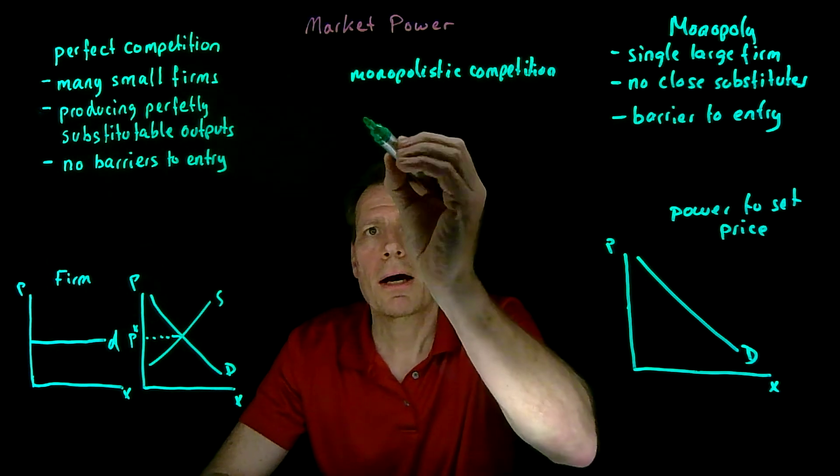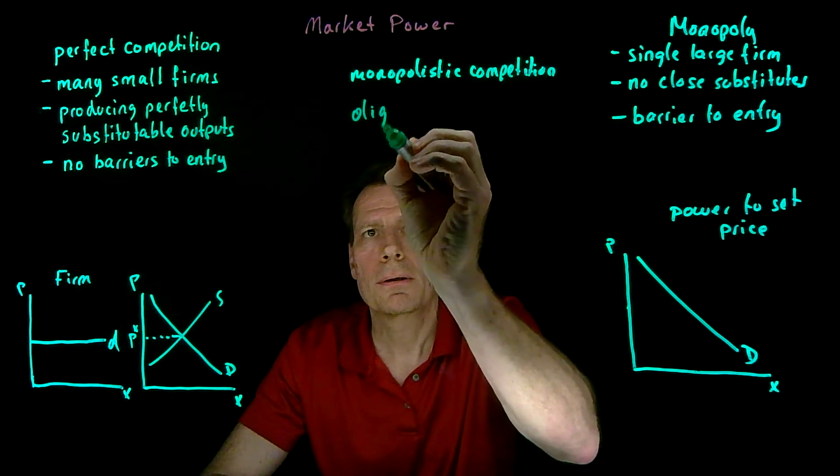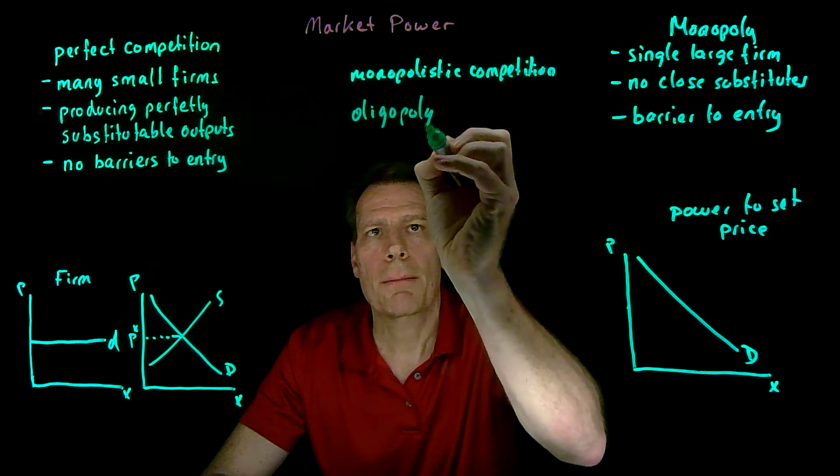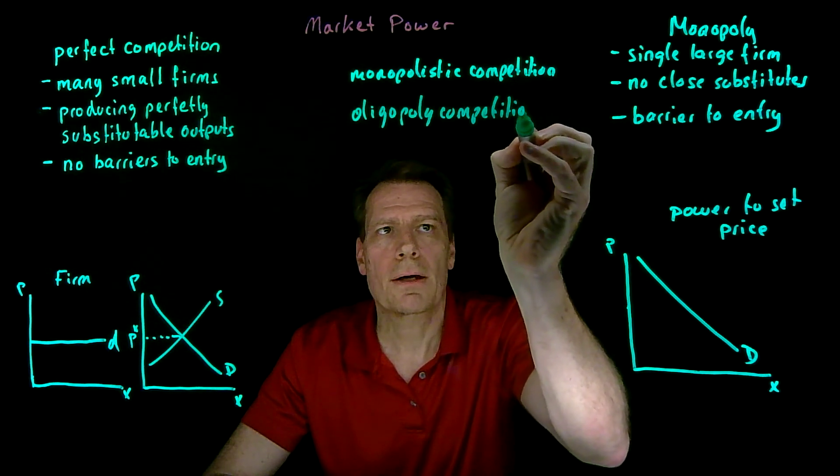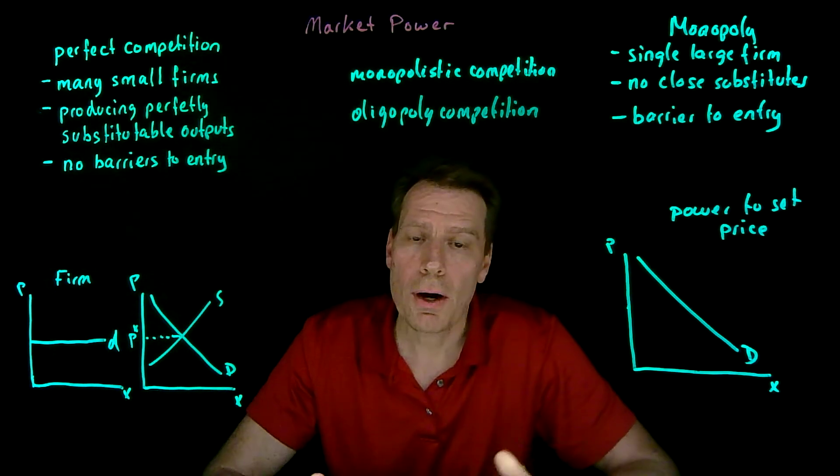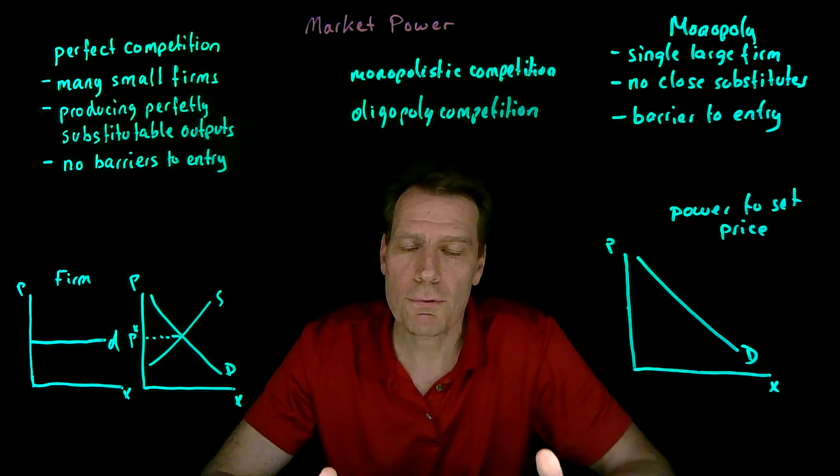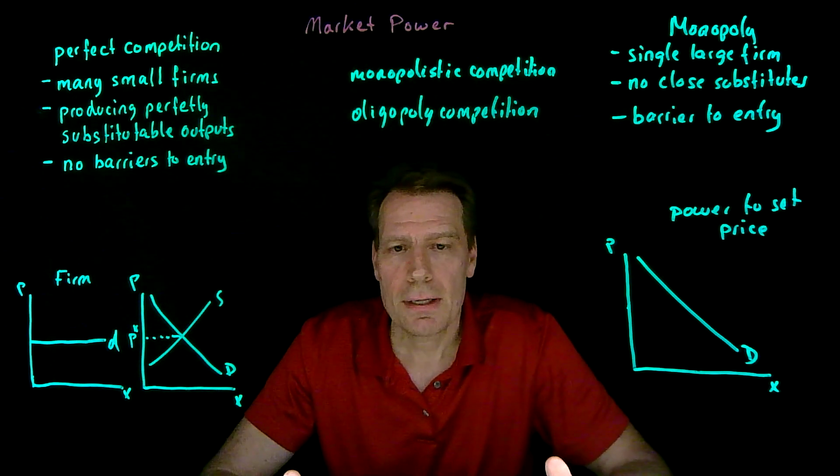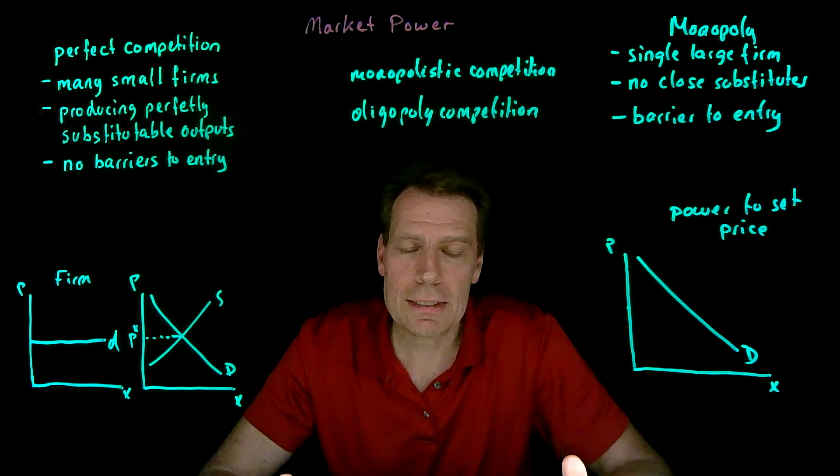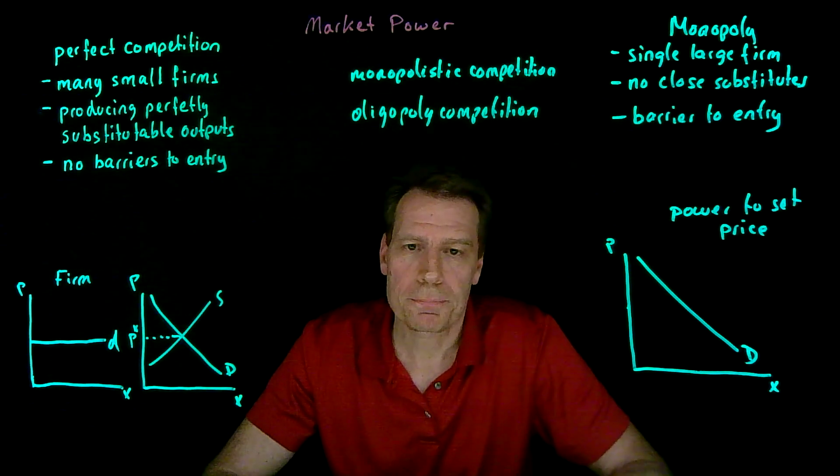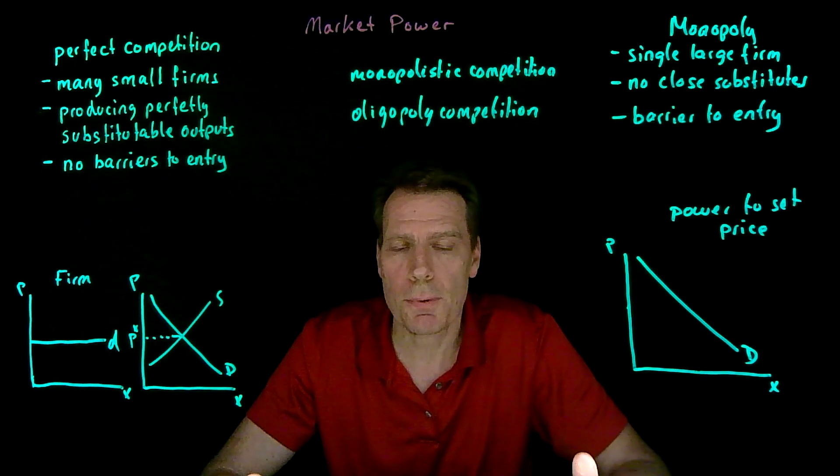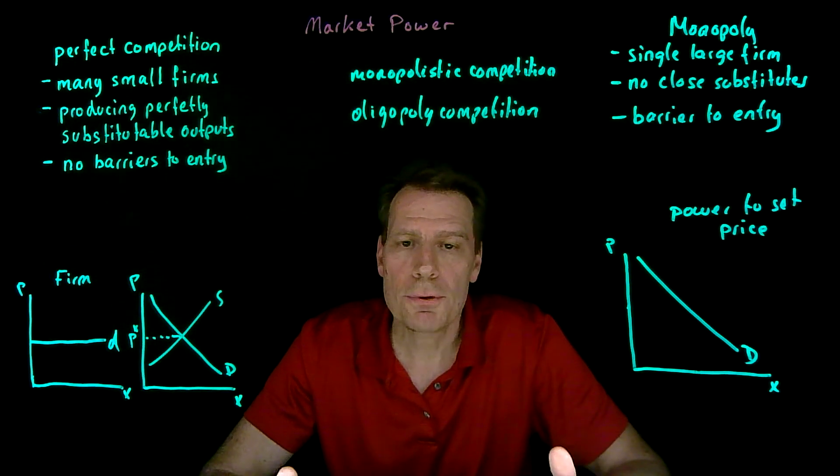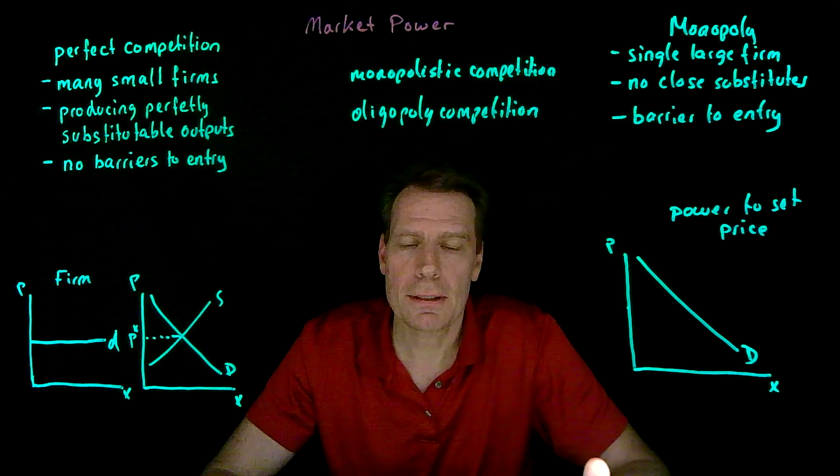We're also going to talk about oligopoly competition. Under oligopoly competition, there are barriers to entry that keep other firms out, but within the industry, there are existing firms, more than one of them. They are producing goods that may be perfect substitutes for one another, but there's only a few larger firms in an oligopoly.